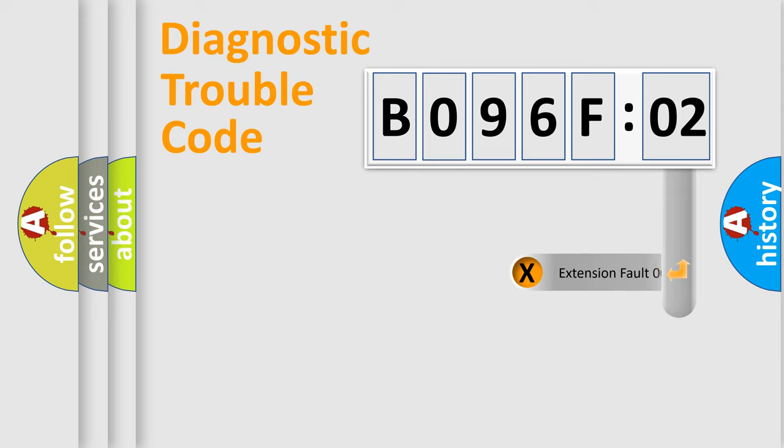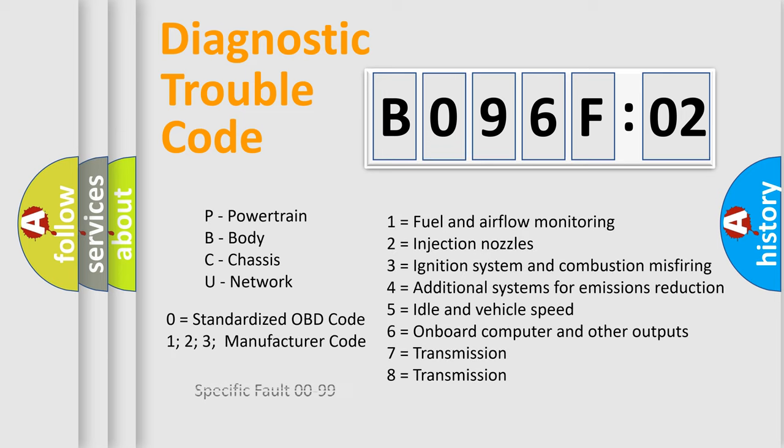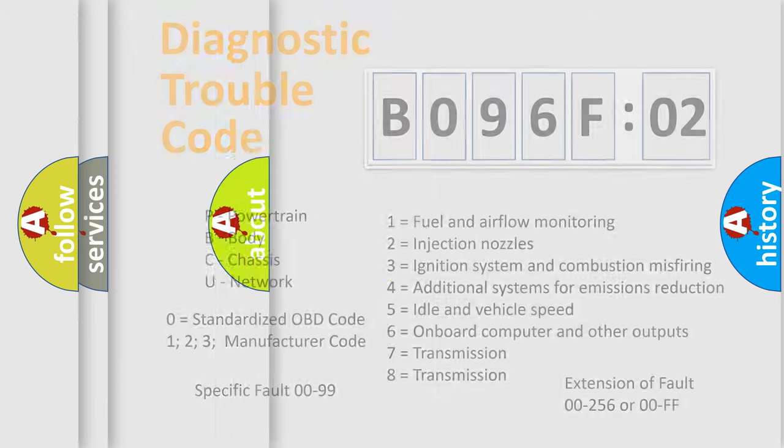Only the last two characters define the specific fault of the group. The add-on to the error code serves to specify the status in more detail, for example, a short to the ground. Let's not forget that such a division is valid only if the second character code is expressed by the number zero.